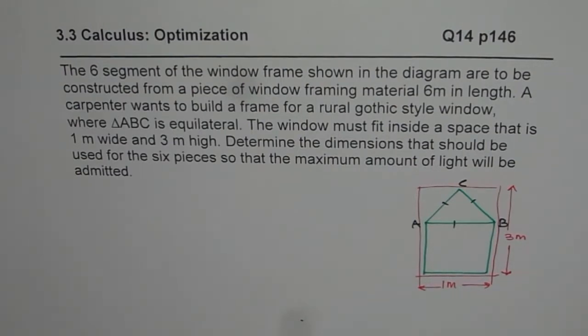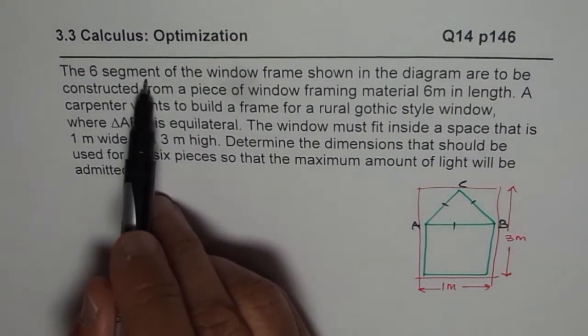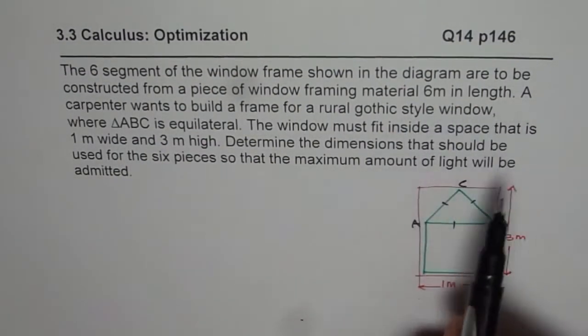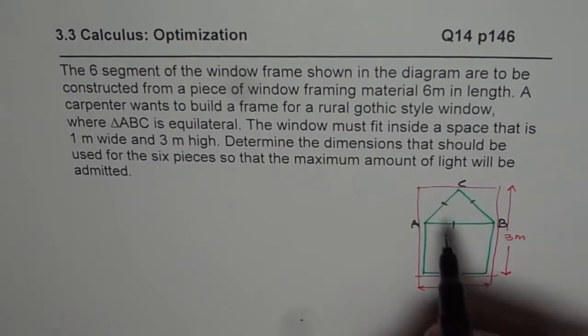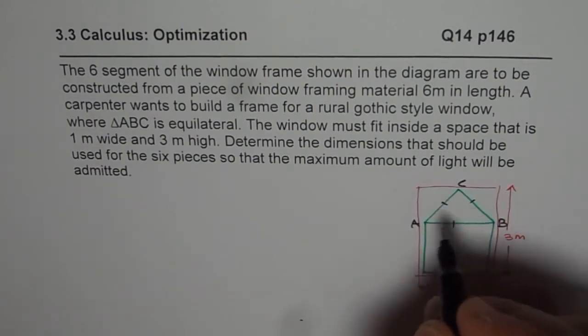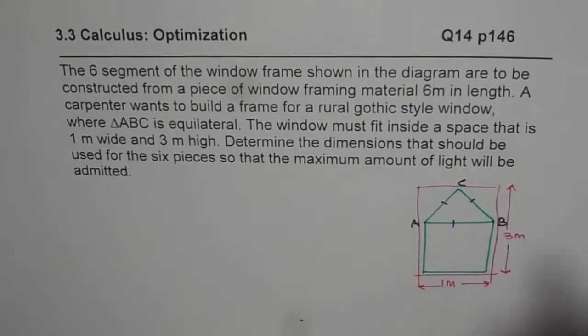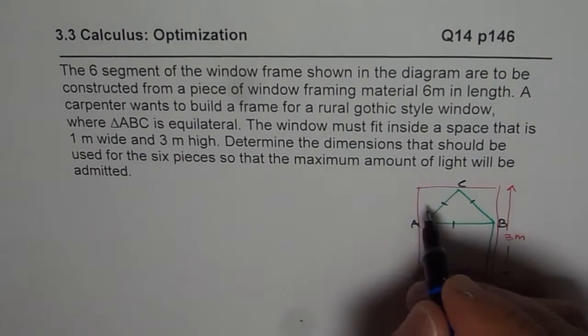Determine the dimensions that should be used for 6 pieces so that the maximum amount of light will be admitted. So it is to be framed in some place whose dimensions are fixed. Now, looking into this diagram, we are given 6 segments, 6 meters length of framing material. So the perimeter has to be 6.